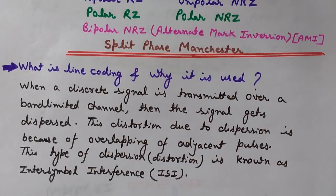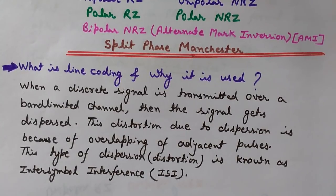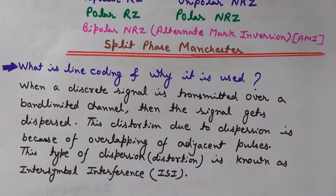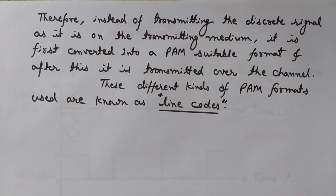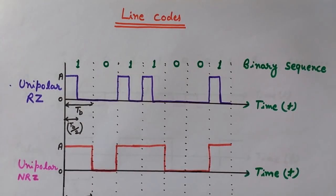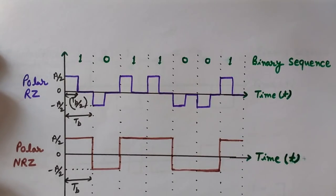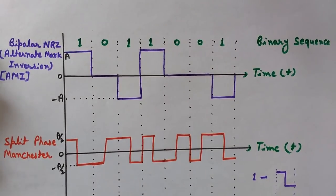We use line coding techniques to remove this ISI effect. First we will understand what is line coding, then see different types of line coding techniques, and after that see how we can use them to remove this effect. We first convert the signal into a suitable PAM format and then transmit it over the channel. These different kinds of PAM formats are known as line codes. We will discuss unipolar RZ, unipolar NRZ, polar RZ, polar NRZ, bipolar NRZ (AMI), and split-phase Manchester.